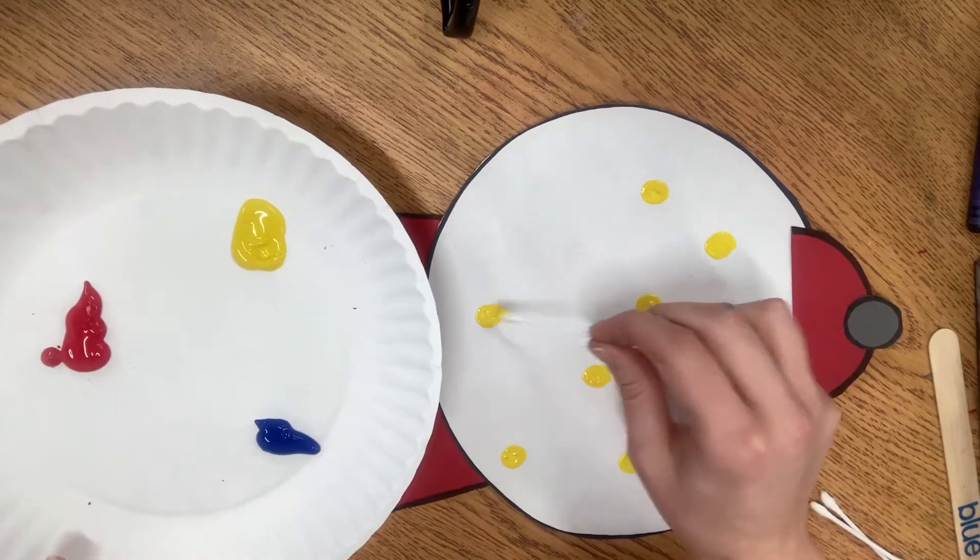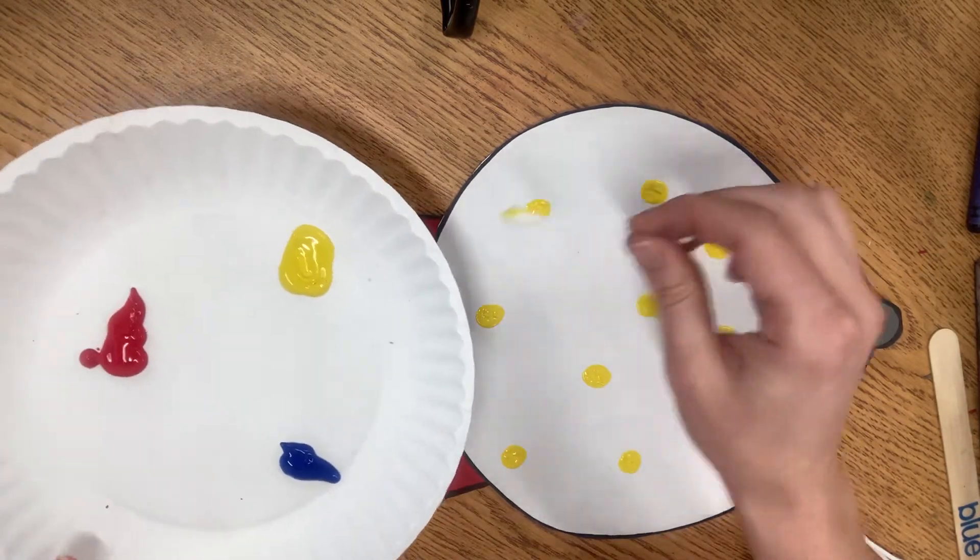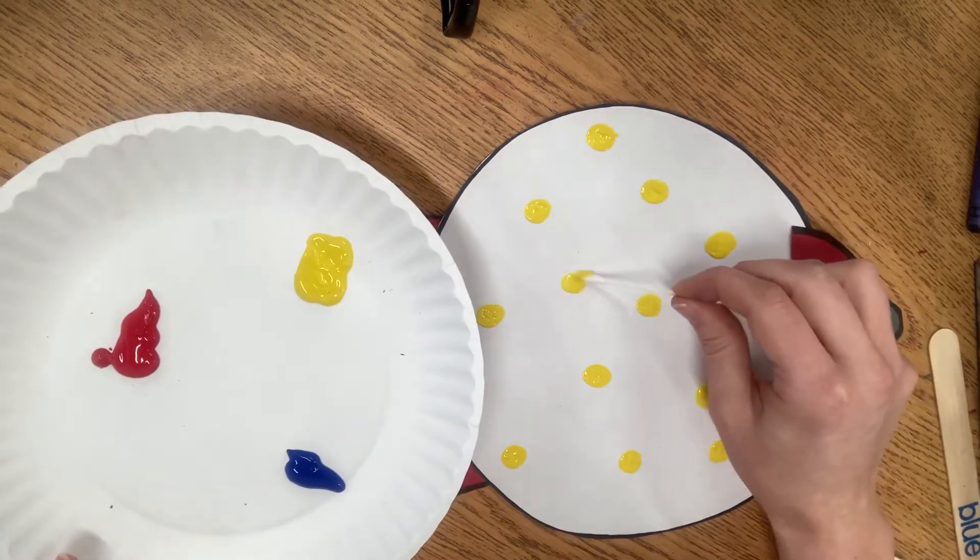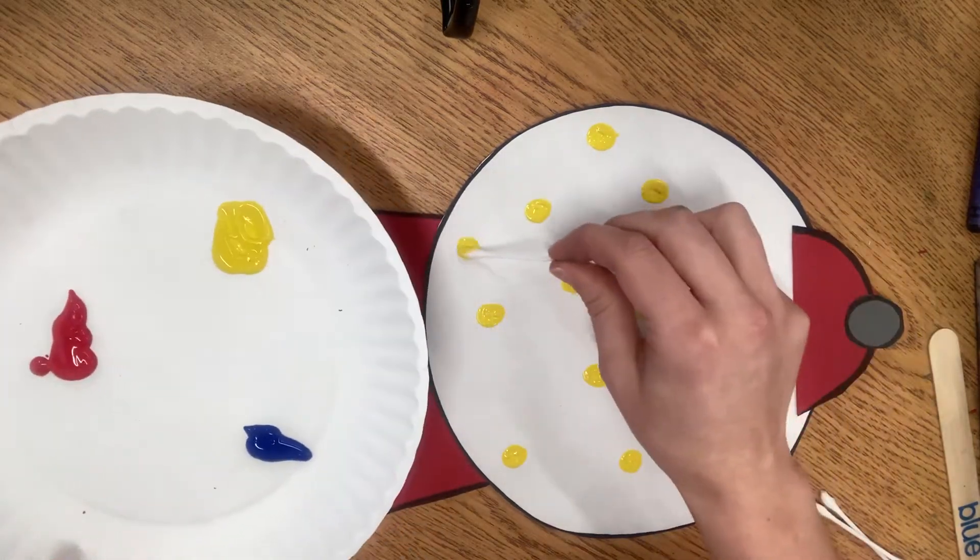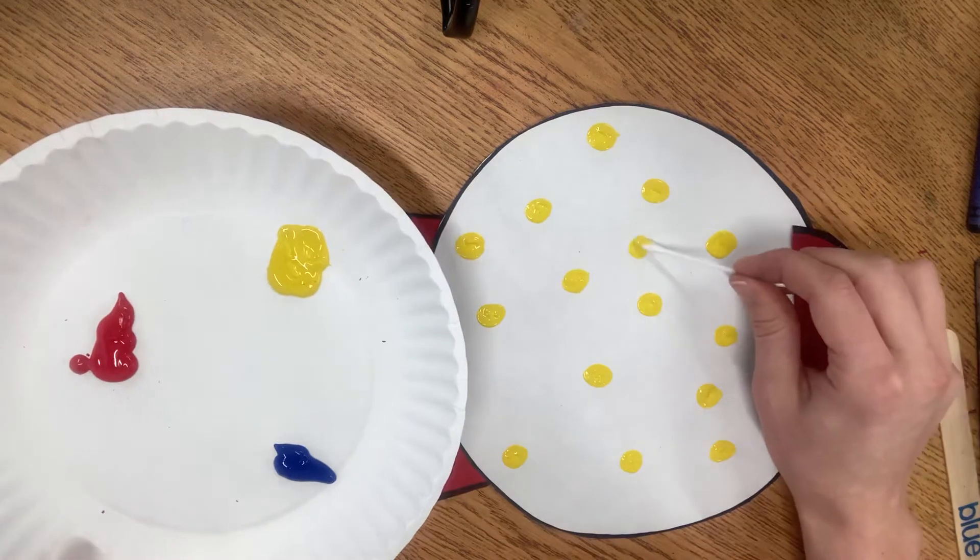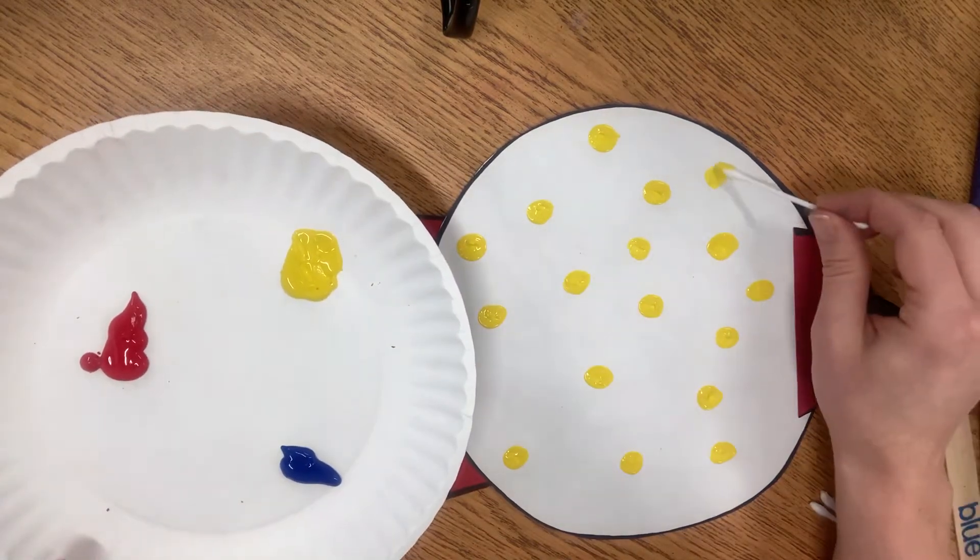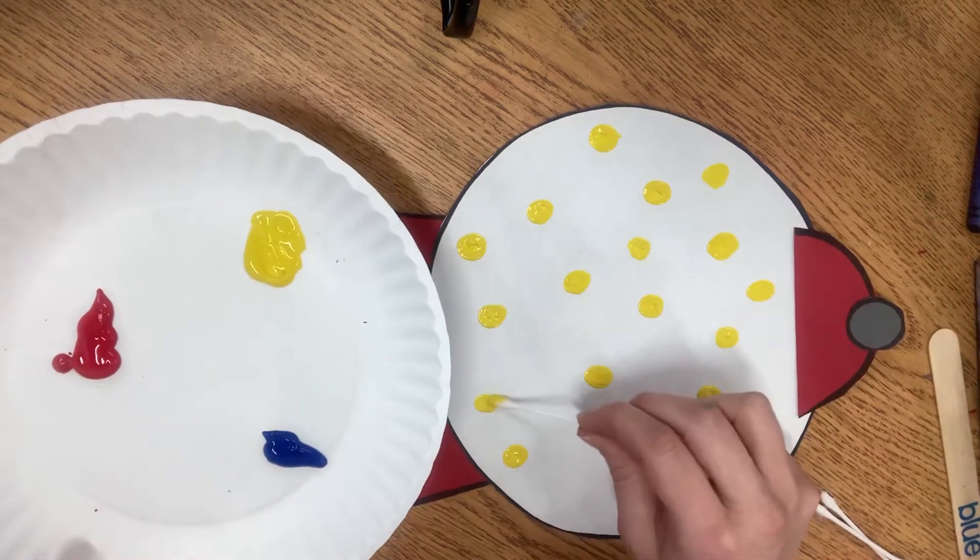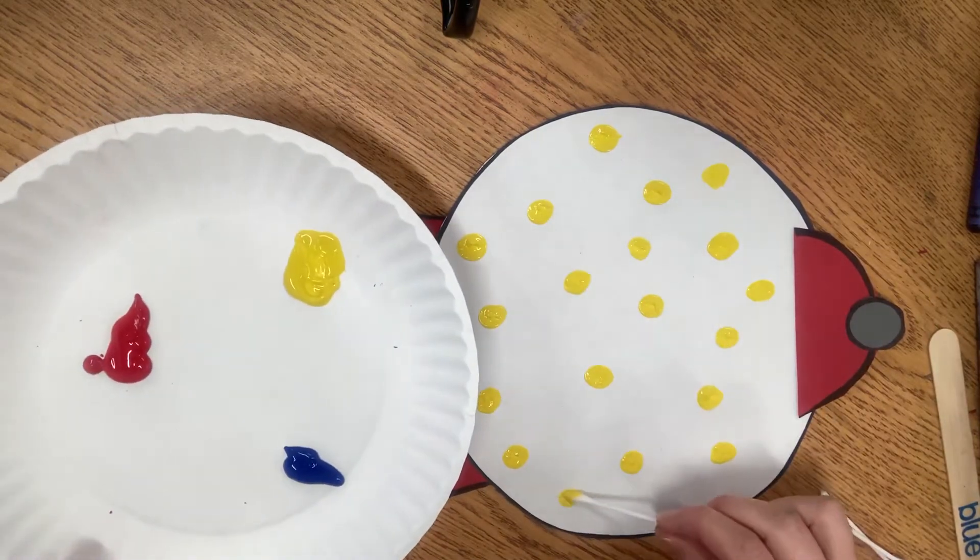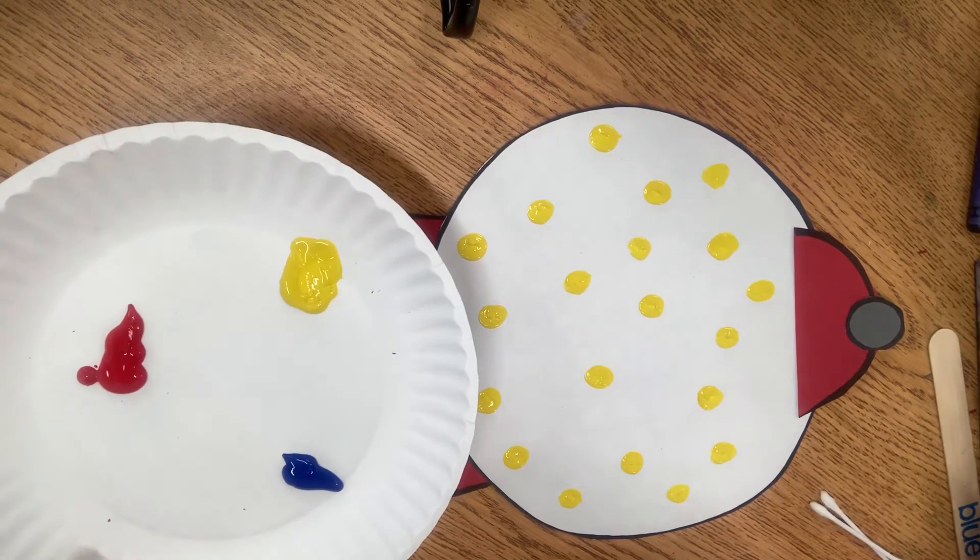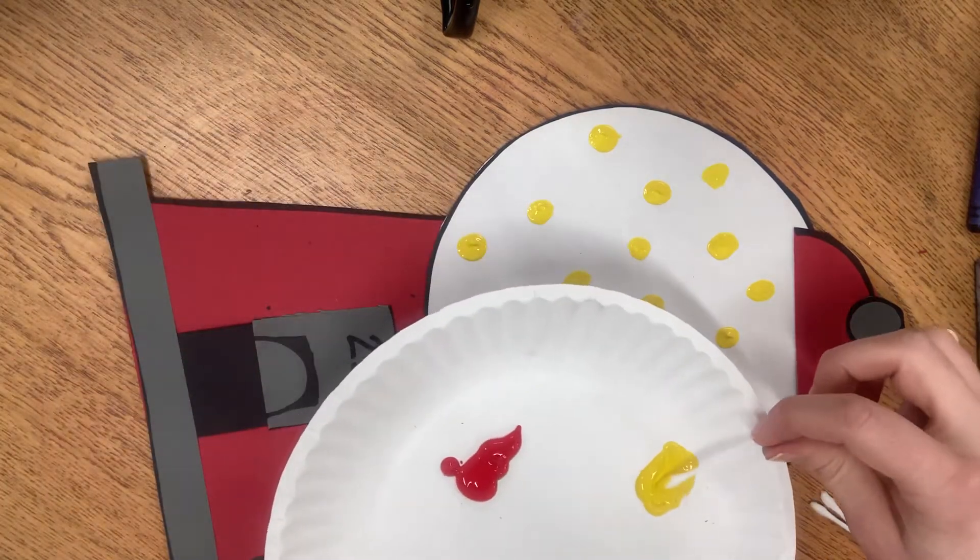And notice too, I'm watching where my hand's at so I'm not dragging it across the wet paint. I'm also staggering my gumballs so my placement is changing so that I don't make a big mess. I have my yellow gumballs just as spread out as I'll have my blue and my red. I think that's good for these gumballs. I'm going to leave this in my plate.